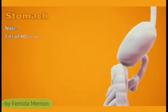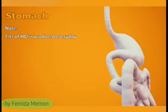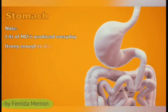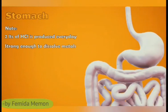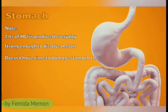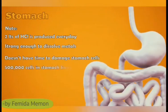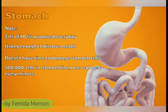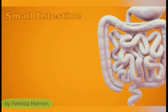The stomach produces about 2 liters of hydrochloric acid a day. Stomach acid is strong enough to dissolve metals, but it does not damage the stomach wall because 500,000 cells in the stomach lining are replaced every minute.